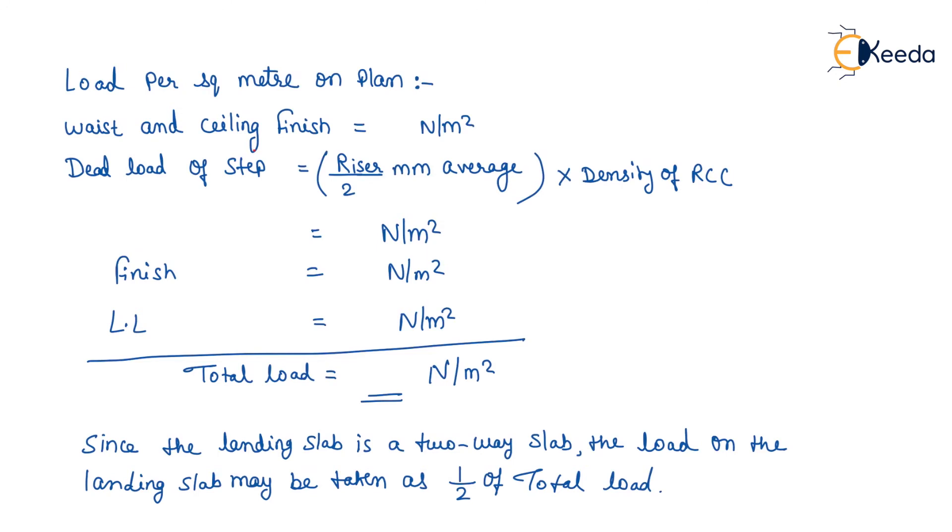Dead load of steps is calculated using formula: (Riser/2) mm average value times density of reinforced concrete cement. Finishing in Newton per meter square will be calculated and is given in the question. Live load will also be given in the question. Now total load will be calculated in Newton per meter square.